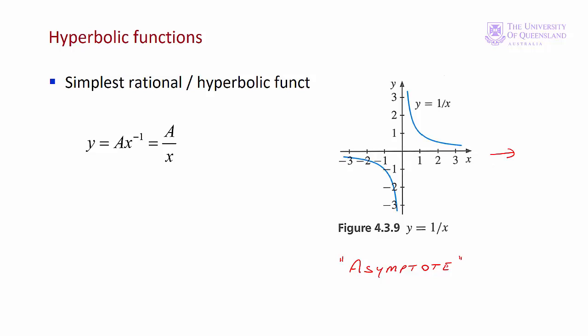As x increases to infinity the function is 1 over infinity, so f of x approaches zero and our graph will approach the x-axis. Similarly when x approaches zero we'll be dividing 1 by a very small number and so the value of our function approaches plus infinity. And similarly for the third quadrant.